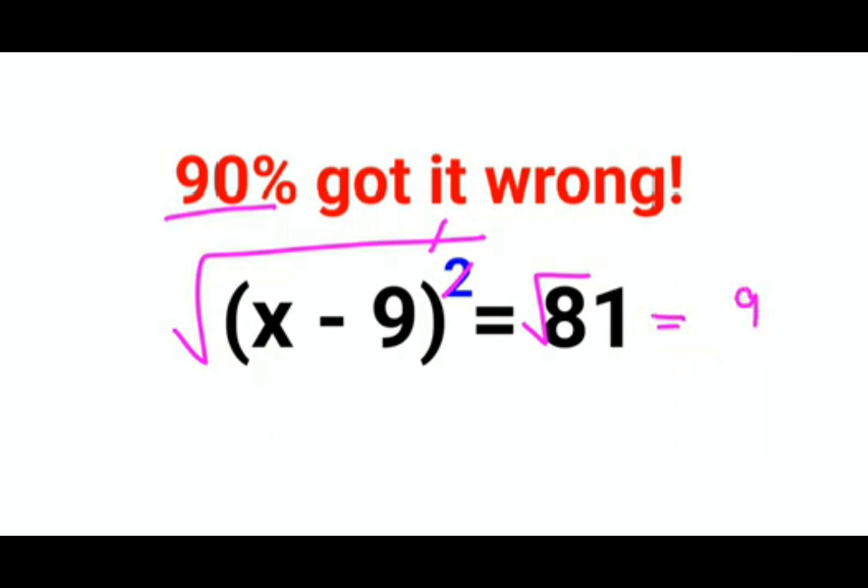Now this is where a lot of people got stuck and they forgot that when you take a square root, the answer normally comes out to be positive or negative of that value. Okay, now why like that?